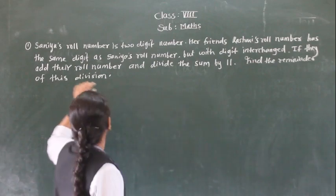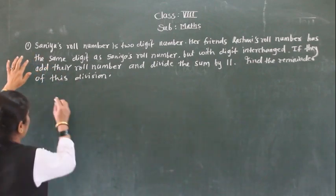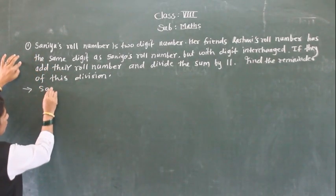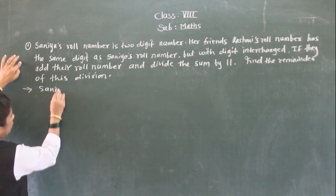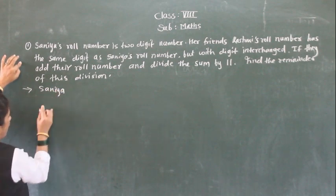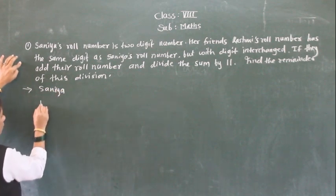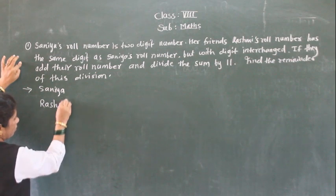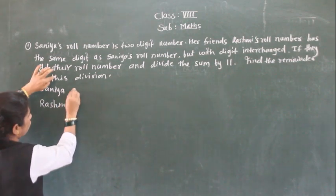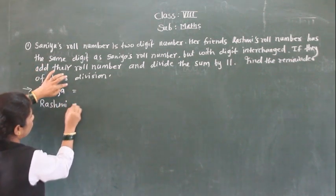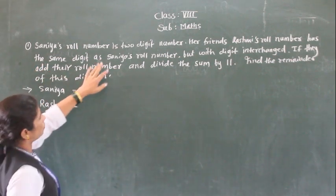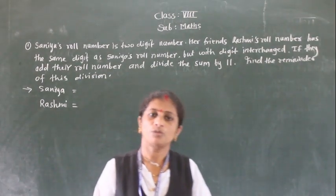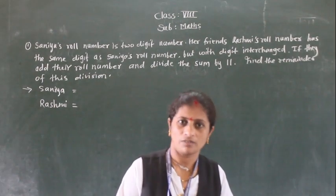So here, two girls are there — first, Samia, and the second one is Rashi. Both roll numbers are two-digit numbers. Both roll numbers are two-digit numbers, so a two-digit number is what we need to work with here.